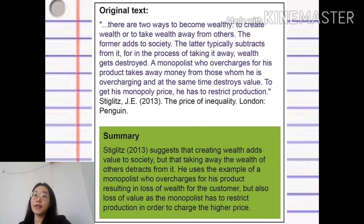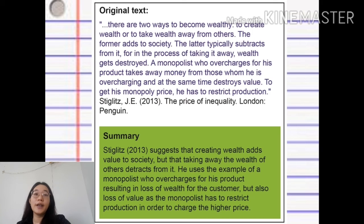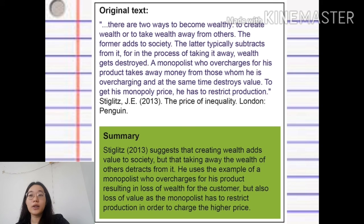Stiglitz (2013) suggests that creating wealth adds value to society, but that taking away the wealth of others detracts from it. He uses the example of a monopolist who overcharges for his product, resulting in loss of wealth for the customer, but also loss of value as the monopolist has to restrict production in order to charge the higher price.